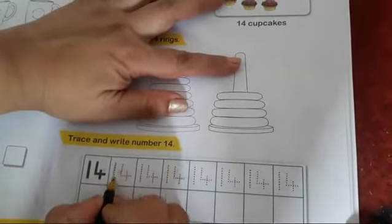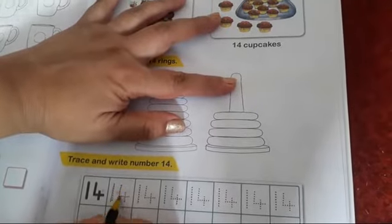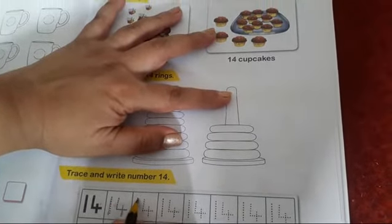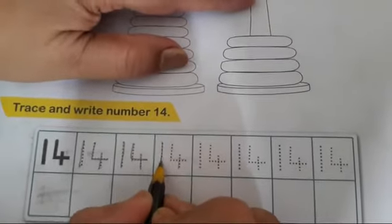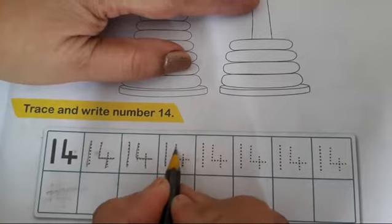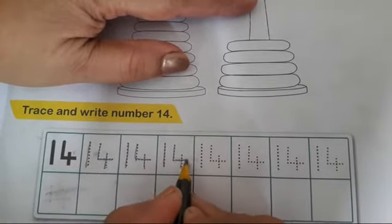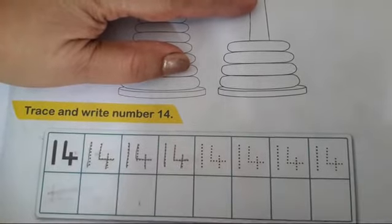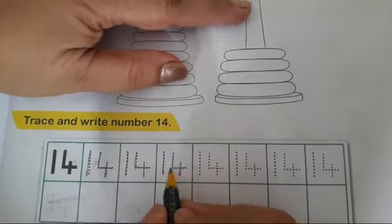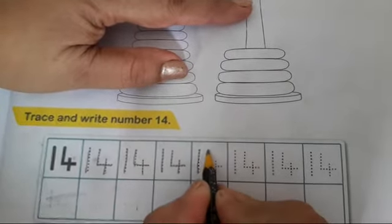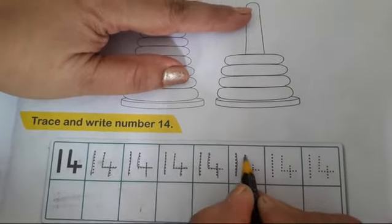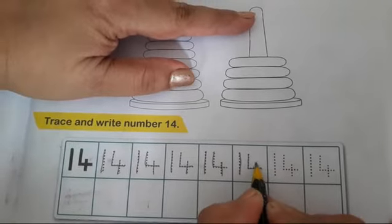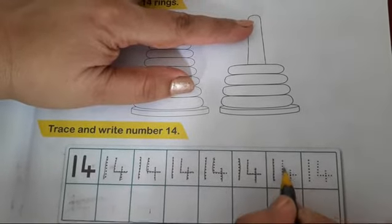How to write number 14? Look at here. Trace number. First you write number 1. And after you write number 4. 1, 4, 14. First you write number 1. Then number 4. 1, 4, 14.